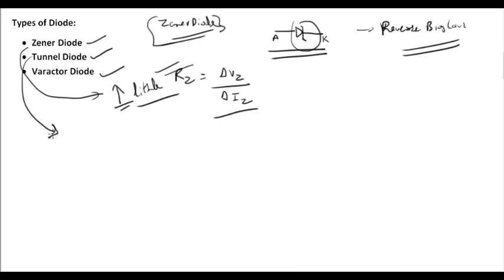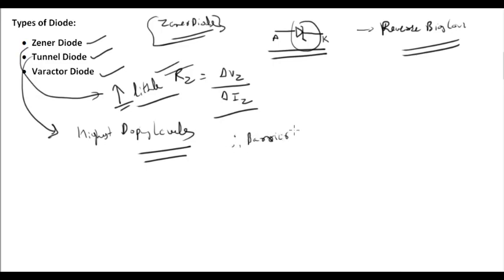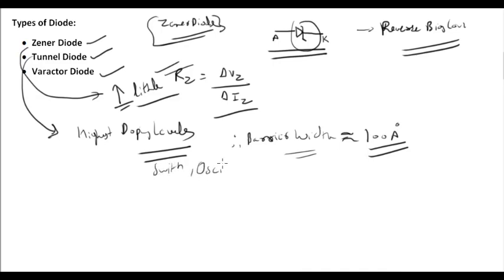Now, the tunnel diode. A previous year VSSC 2009 question asked about the tunnel diode. The tunnel diode has the highest doping level. Its barrier width is approximately 100 Ångströms. Applications: it is used as a high-speed switch and high-frequency oscillator.